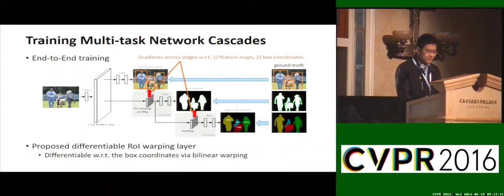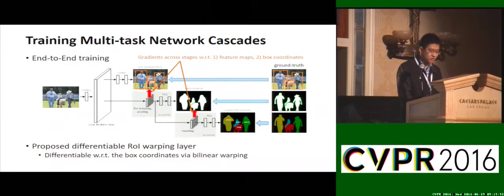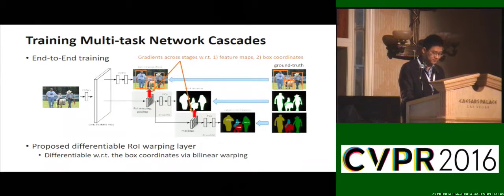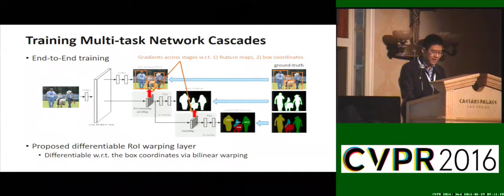Training a multi-stage cascade is non-trivial because of the causal relations among the multiple outputs. According to the chain rule of backpropagation, the gradients involve those with respect to the convolutional responses and also those with respect to the spatial coordinates of predicted boxes. To achieve theoretically valid backpropagation, we develop a differentiable ROI warping layer that is differentiable with respect to spatial coordinates. Our cascade model can thus be trained end-to-end via a clean single-step framework. This single-step training algorithm naturally produces convolutional features shared among the three subtasks, which are beneficial to both accuracy and speed.